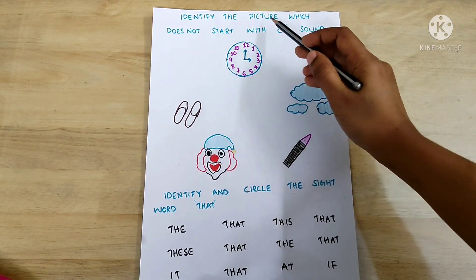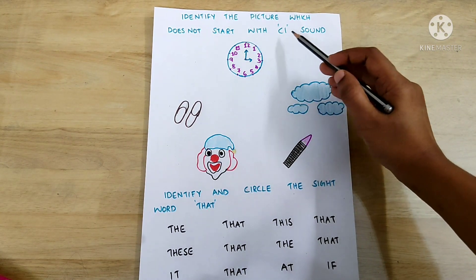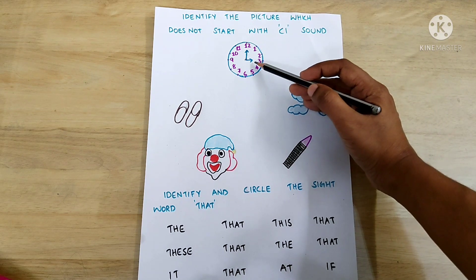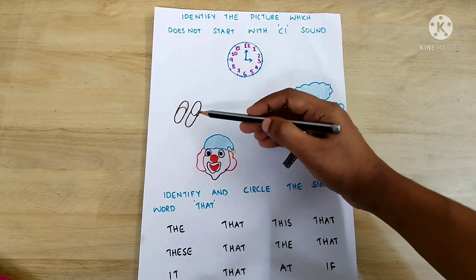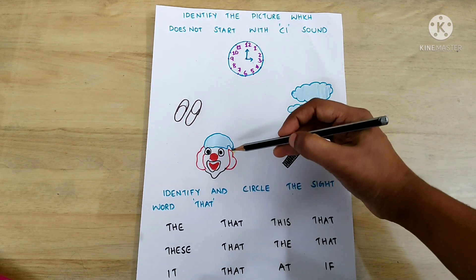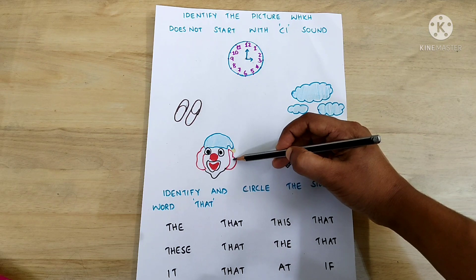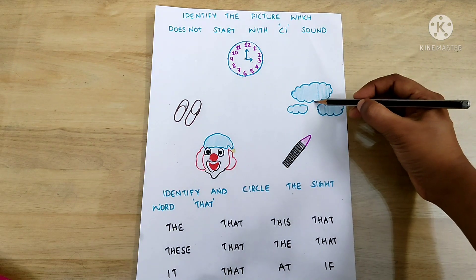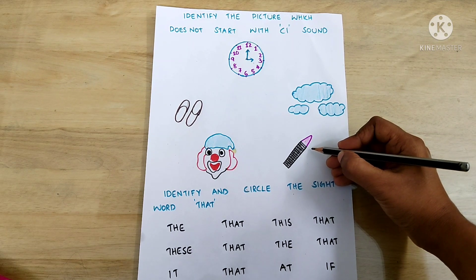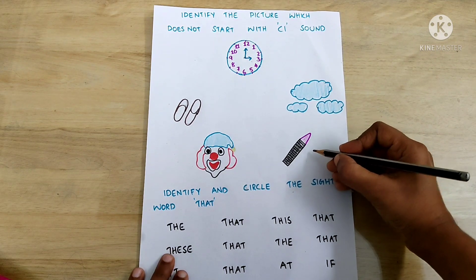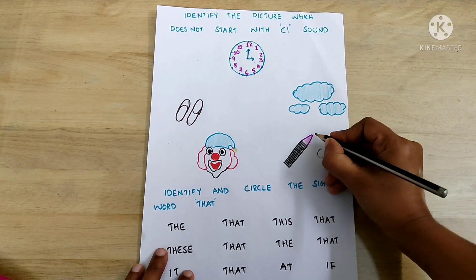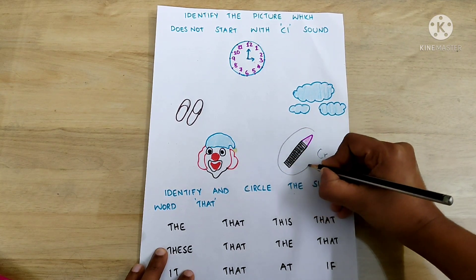Identify the picture which does not start with the 'cl' sound. Clock, Clips, Clown, Cloud, Crayon. Crayon does not start with the 'cl' sound — it starts with the 'cr' sound. So crayon is the odd one out.